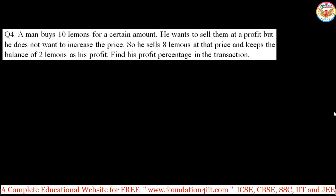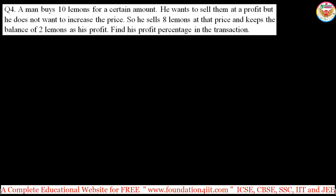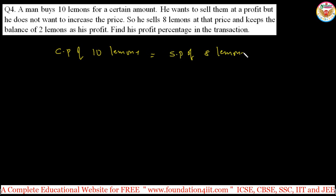Here is one more shortcut — fourth question. A man buys 10 lemons for a certain amount and wants to make a profit without increasing the price, so he sells 8 lemons at that price and keeps 2 as his profit. Find his profit percentage. Cost price of 10 lemons equals selling price of 8 lemons, because he is keeping 2 as his profit and selling only 8.